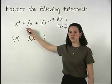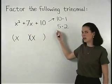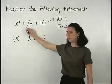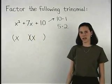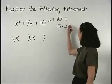In other words, the factors of ten that we use must add up to seven. And the factors of ten that add to seven are five and two.